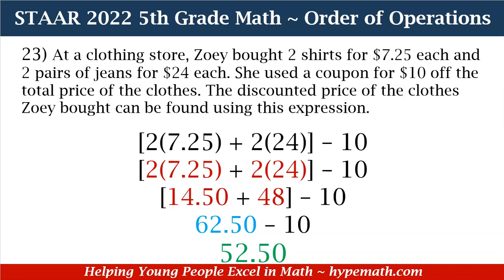We're going to start with our bracket first. In our bracket, we have two multiplications to take care of, and then after we get that answer we're going to add. First, 2 times 7.25 is equal to $14.50, and 2 times 24 is equal to $48. So now in our brackets we have $14.50 plus $48. Adding those together is equal to $62.50. Now we can drop the brackets and we're subtracting 10.